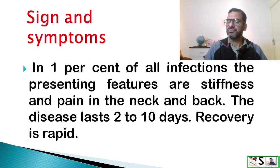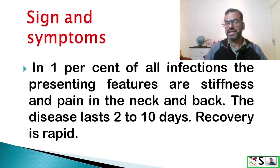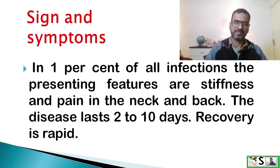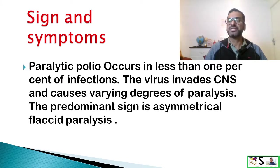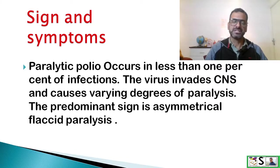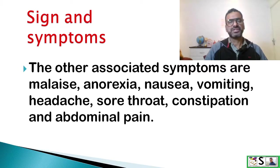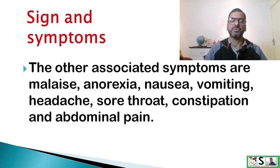In 1 percent of all infections of poliomyelitis, the presenting features are stiffness and pain in the neck and back. The disease lasts 2 to 10 days and recovery is very rapid. Paralytic polio occurs in less than 1 percent of infections. The virus invades the central nervous system and causes varying degrees of paralysis. The predominant sign is asymmetrical flaccid paralysis. Other associated symptoms are malaise, anorexia, nausea, vomiting, headache, sore throat, constipation, and abdominal pain.